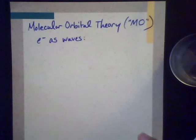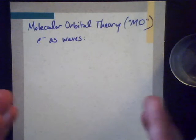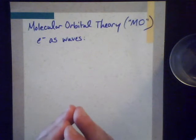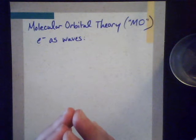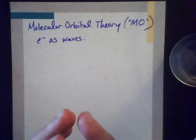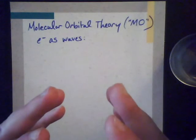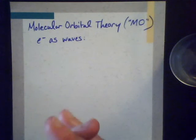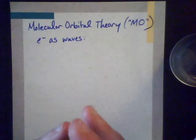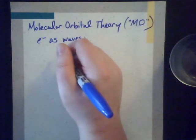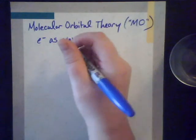So if we have overlapping orbitals, these orbitals are coming together and interfering with each other. We're not just talking about balloons or shapes that come together — now we're talking about waves that are coming together and interfering with each other. And if we have waves that are interfering, then they can interfere in two ways: constructively or destructively.